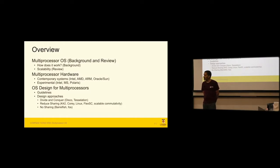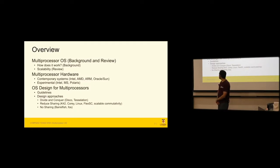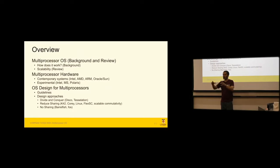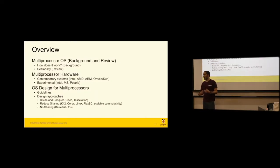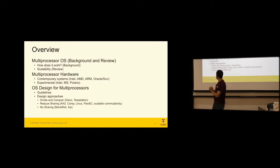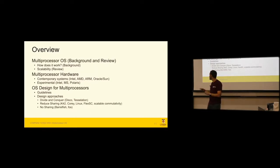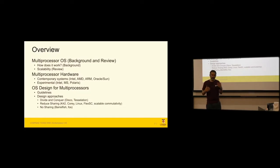Then we'll talk about how to actually design the operating system to run on a multiprocessor: what are some challenges, what are the guidelines? We'll look at design approaches from academia and industry — things like divide and conquer, ways to reduce sharing, and more radical approaches like no sharing at all, where there are no shared data structures in the OS. This is where things like Barrelfish come in. Today we'll mainly focus on what a multiprocessor OS is and what multiprocessor hardware is, and on Thursday we'll look at OS design.